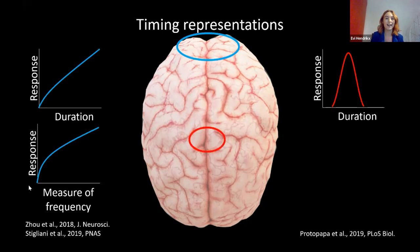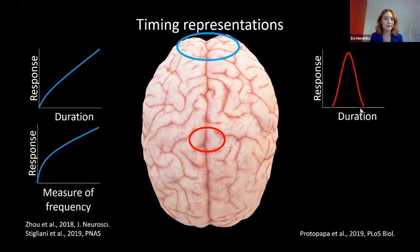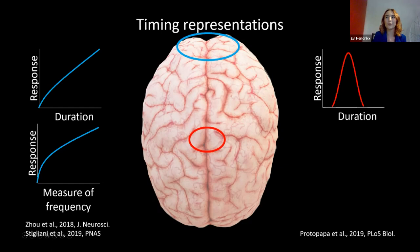There is a second type of response found in the supplementary motor area. This response is not constantly increasing as duration increases, but it has a very specific range that it responds to. For example, a neuronal population might respond to a range from 100 milliseconds to 500 milliseconds, with a peak in the middle of the response. Different neuronal populations can have different tuning functions — varying in position or width on the axes. I'll refer to these types of responses as tuned responses.